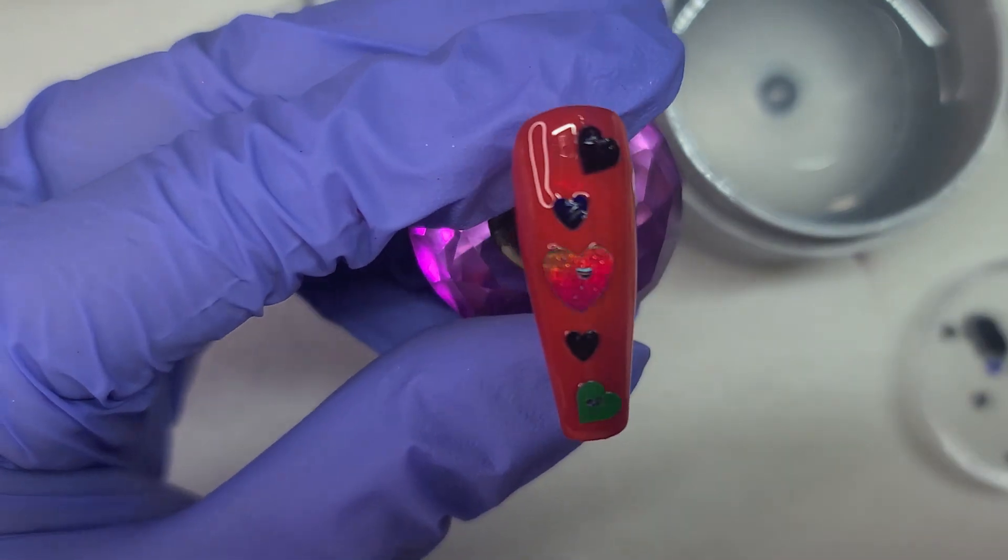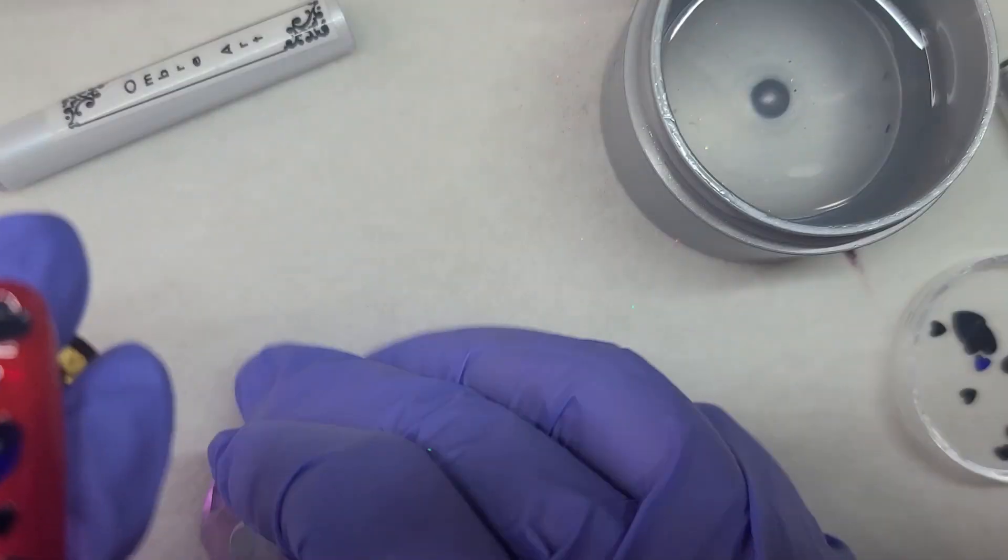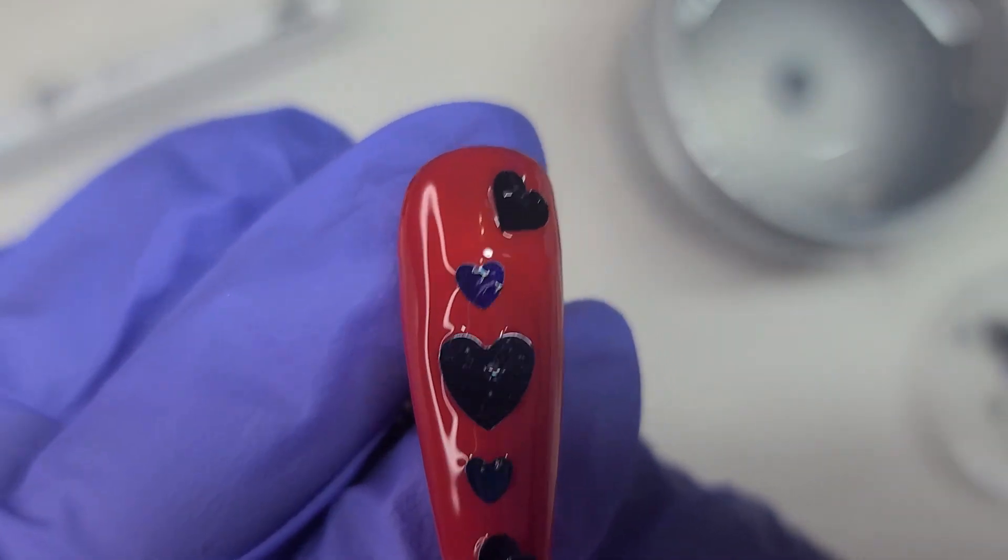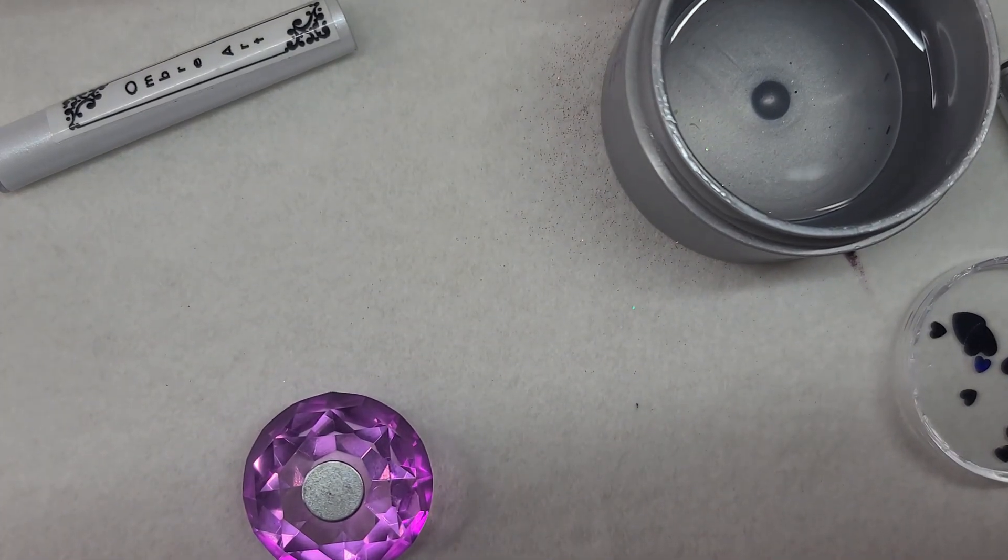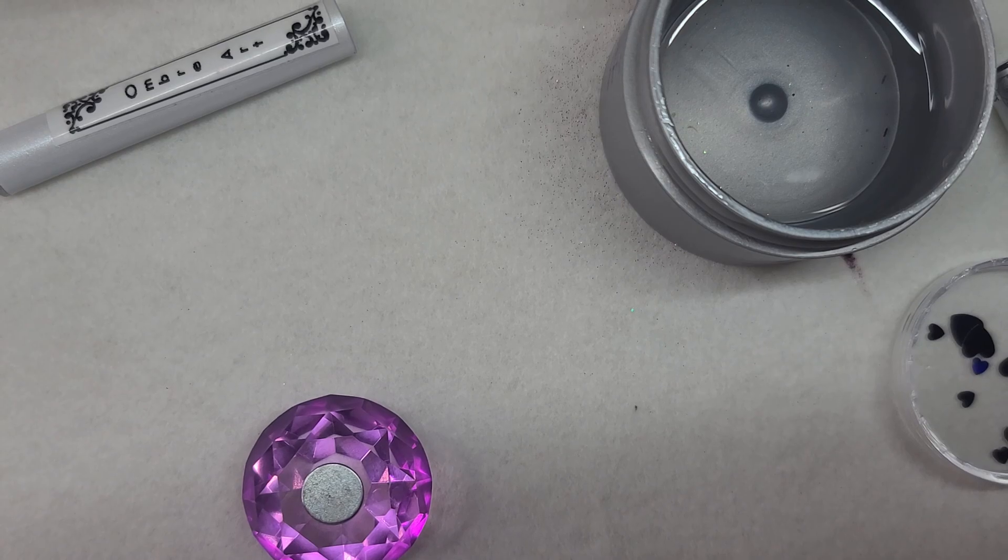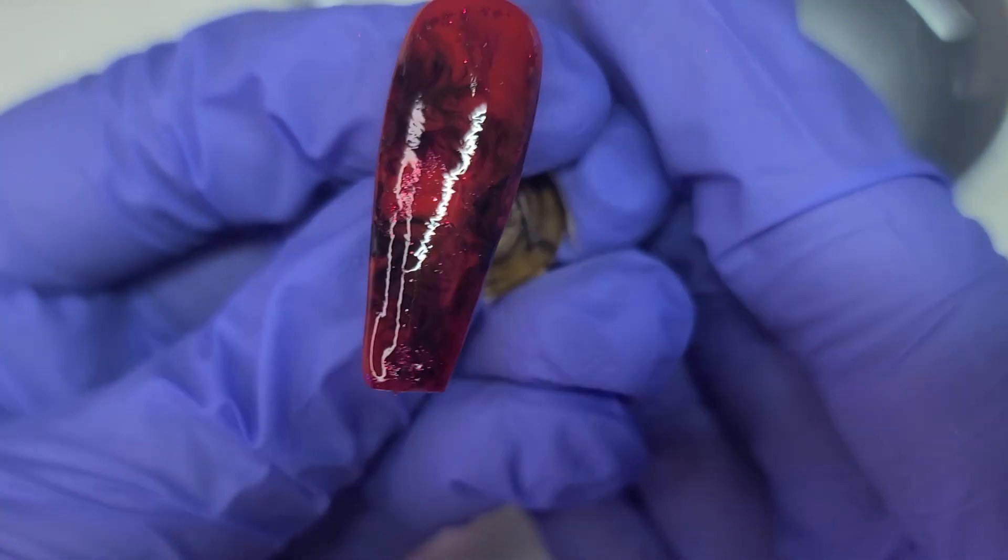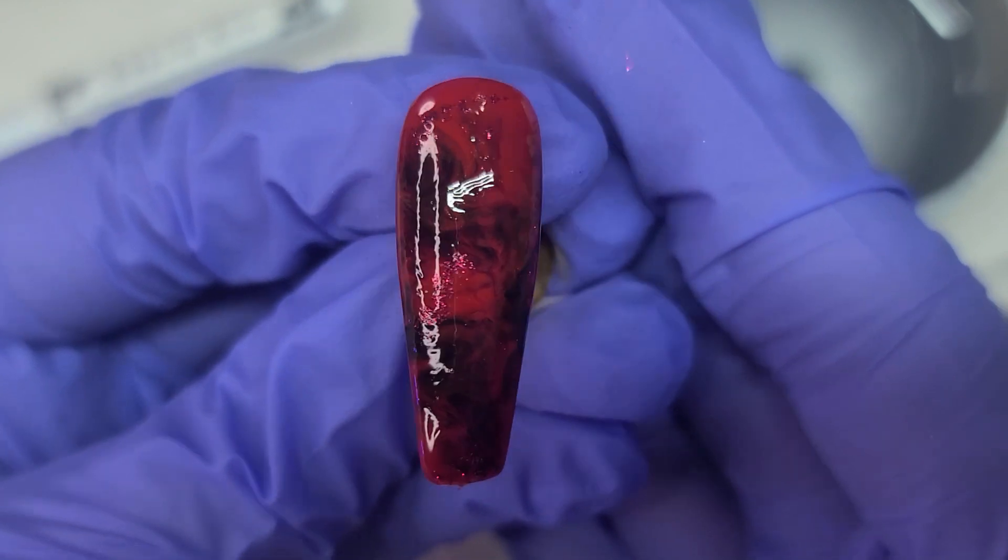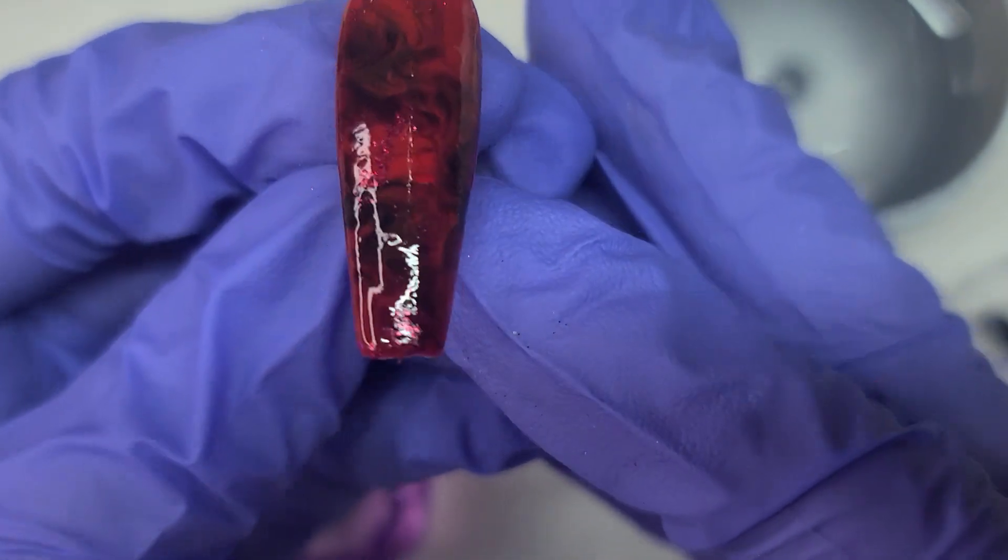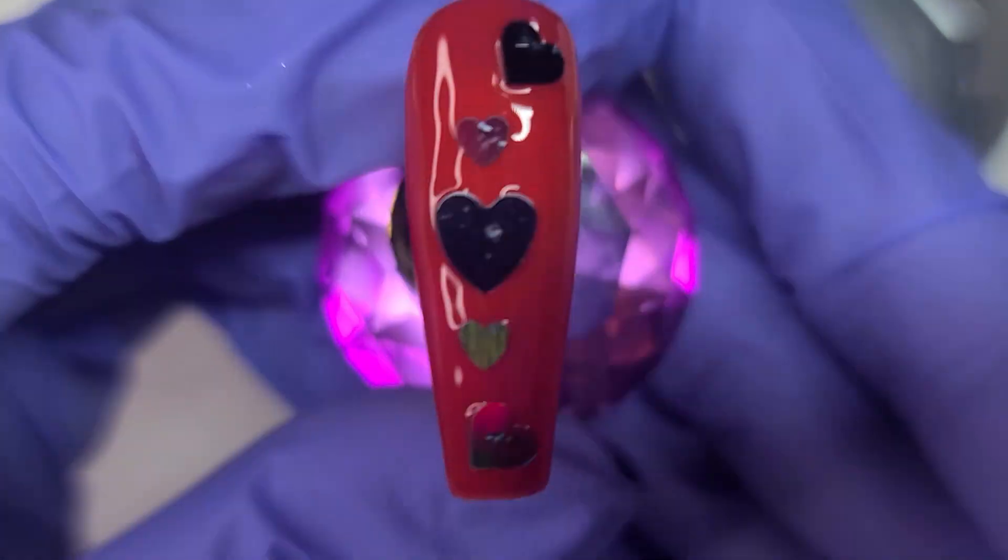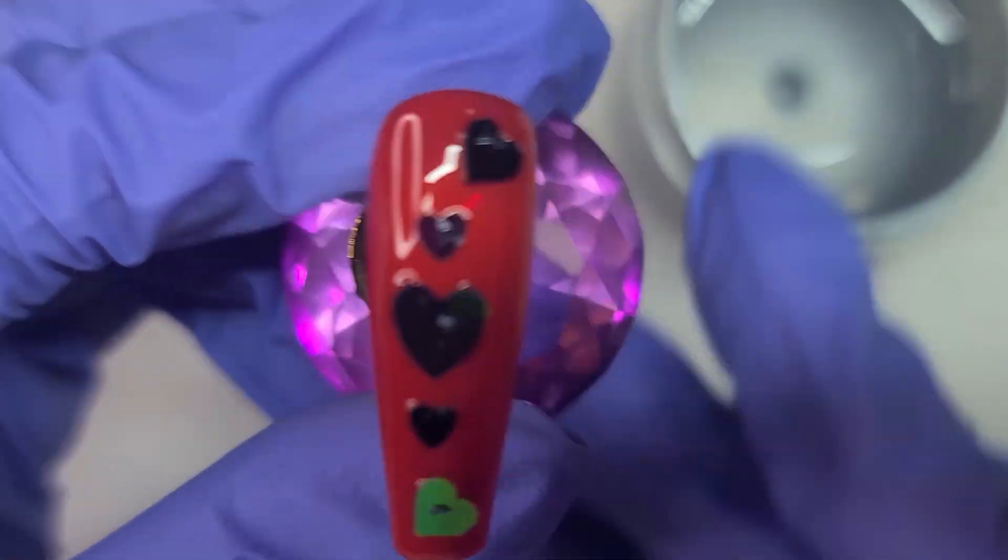And then I want a big one for the middle. And I like that. So I'm going to cure this in the light for 60 seconds. And then we'll encapsulate these with the hard gel. Here's the other marble nail. I really love how this one turned out.